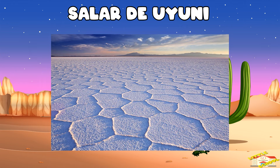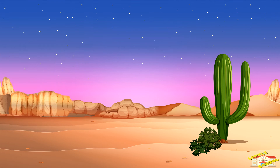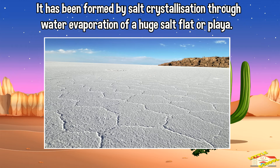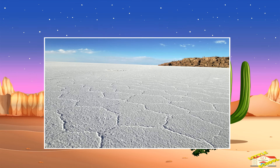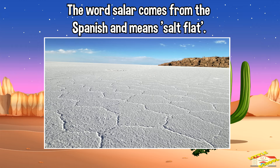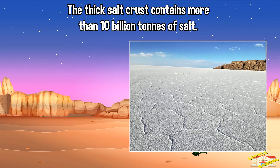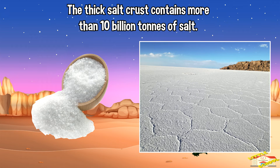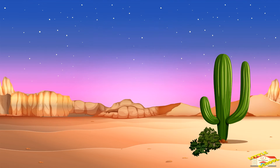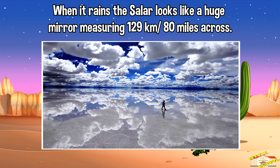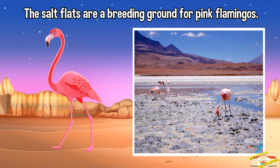The Salar de Ayuni is a desert in South America formed by salt crystallization through water evaporation of a huge salt flat or playa. The word 'salar' comes from Spanish and means salt flat. The thick salt crust contains more than 10 billion tons of salt. When it rains, the Salar looks like a huge mirror measuring 129 kilometers or 80 miles across. The salt flats are a breeding ground for pink flamingos.